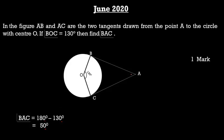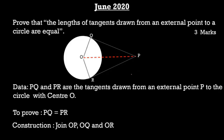The next question is: prove that the lengths of tangents drawn from an external point to a circle are equal. This is Theorem 4.2, and I have already explained this question which was asked in the September 2020 question paper.